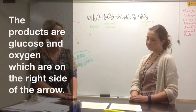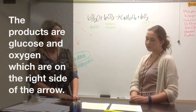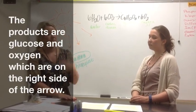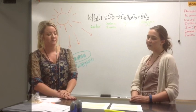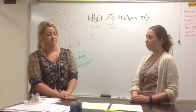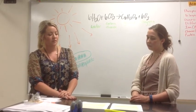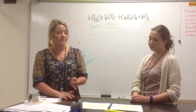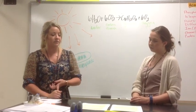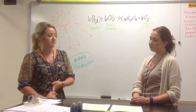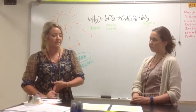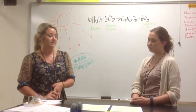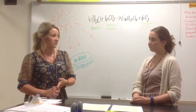Is it like this for all chemical equations? For all chemical equations, the reactants are always on the left side and the products are always on the right side. That's pretty easy to remember. So 6 water molecules plus 6 carbon dioxide molecules will react to yield 1 glucose molecule and 6 oxygen molecules.